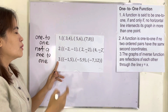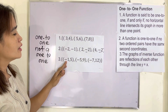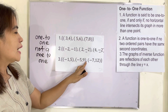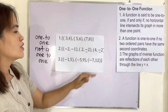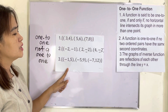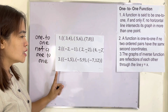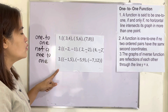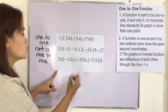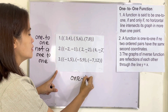In number three we have {(-1,5), (-5,9), (-7,12)}. No x is repeated and no y is also repeated, so therefore this one is a one-to-one function.